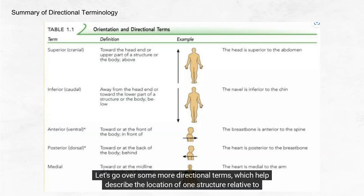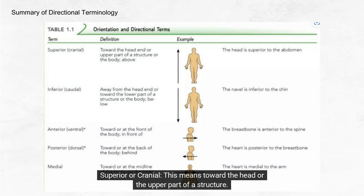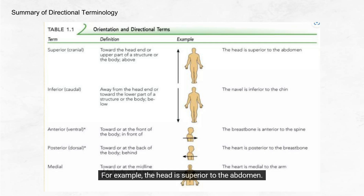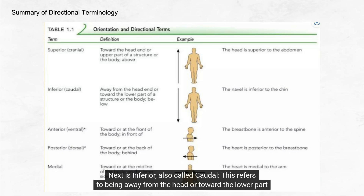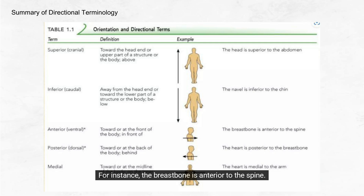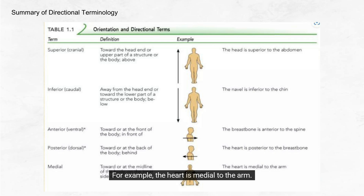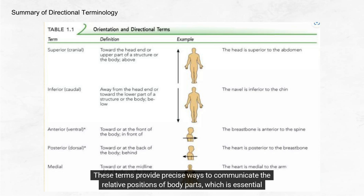Let's review some more directional terms. Superior or cranial means toward the head or upper part of a structure — the head is superior to the abdomen. Inferior or caudal refers to being away from the head or toward the lower part — the navel is inferior to the chin. Anterior or ventral means toward the front of the body — the breastbone is anterior to the spine. Posterior or dorsal means toward the back — the heart is posterior to the breastbone. Medial means closer to the midline of the body — for example, the heart is medial to the arm. These terms provide precise ways to communicate the relative positions of body parts, which is essential in medical practice.